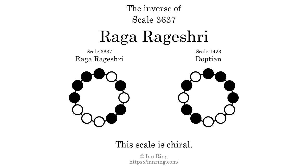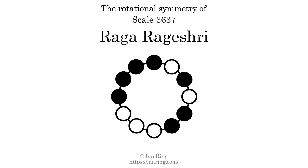The inverse of a scale is a mirror image. It is what you get when the sequence of intervals is reversed. The inverse of this scale is scale 1423, also known as adoption. This scale is chiral — it cannot transform into its inverse by rotational transformation. This scale has no rotational symmetry.